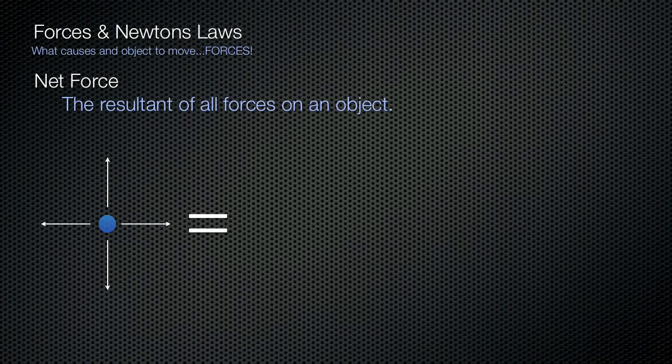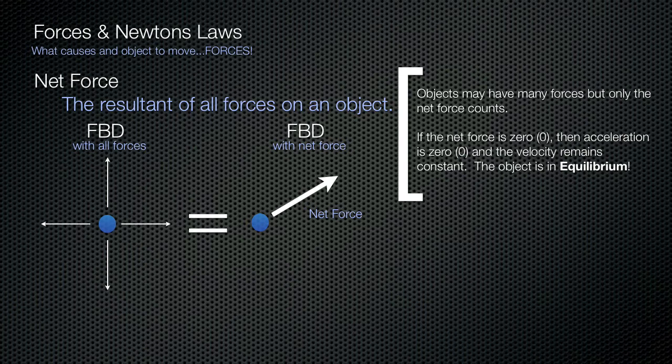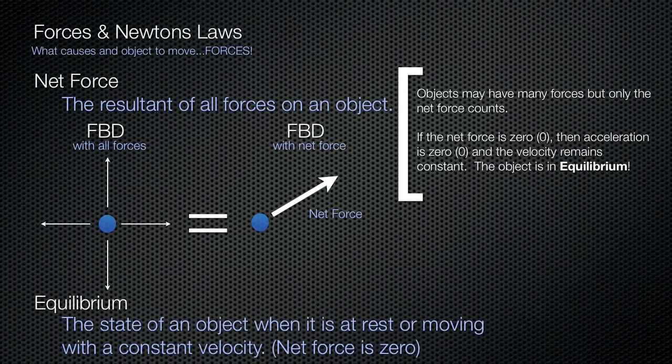Many forces may be acting on one object, but the only thing that really counts is the net force — the resultant of all those other forces on the object. If the net force is zero, then the acceleration is zero, and the object will either remain moving with constant velocity or be at rest. The object is said to be in equilibrium — the state where the net force is zero. It doesn't mean there are no forces, just that their sum equals zero.